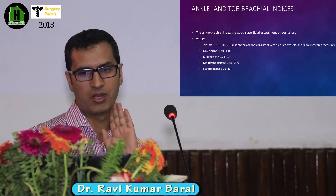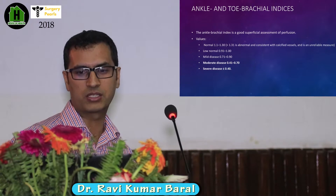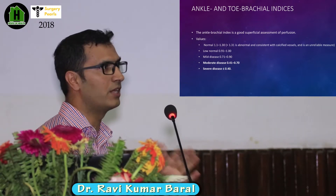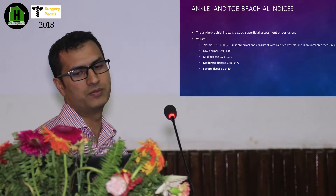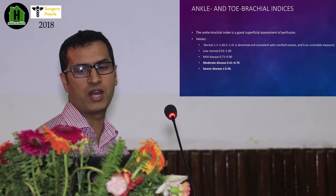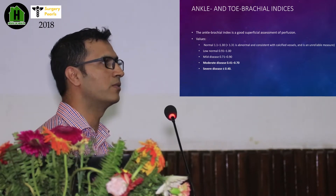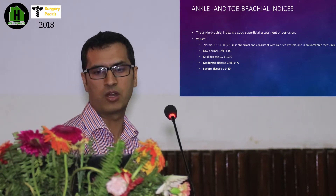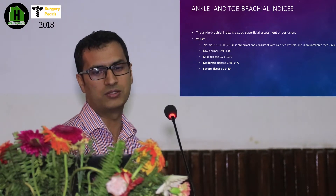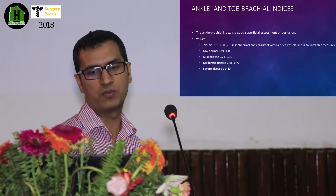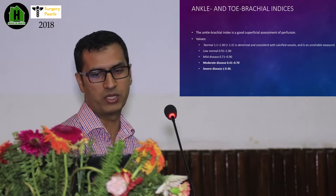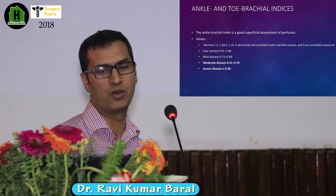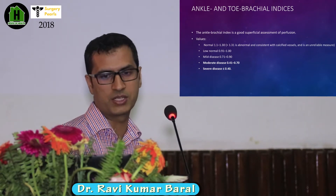Regarding ankle-brachial index values: when it is more than 1.3, it is unreliable due to calcified non-compressible vessels. Normal ABI is 1.1 to 1.3; low normal is 0.91 to 1.0; less than 0.9 to 0.71 is mild disease; 0.41 to 0.70 is moderate disease; and less than 0.40 indicates critical limb ischemia.